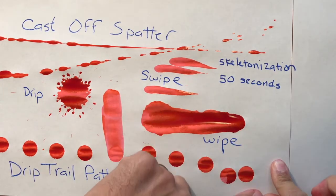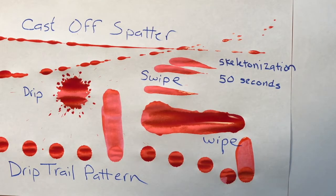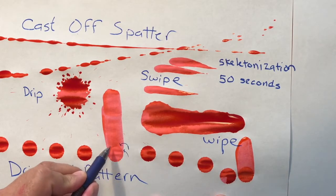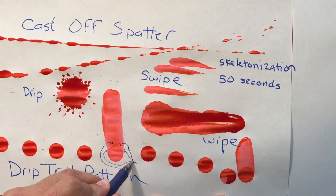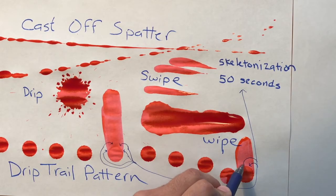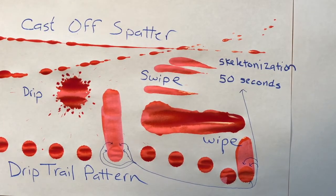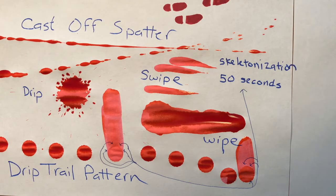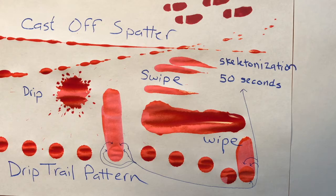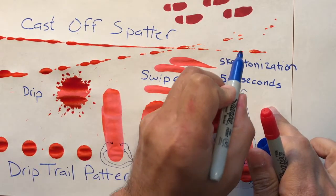Here are demonstrations of cast-off from a knife, drip trail pattern with visible 90-degree drops, drip pattern with visible spines and satellite spatter, and contact/transfer patterns like shoe marks. That covers about 10 to 12 different types of spatter patterns.